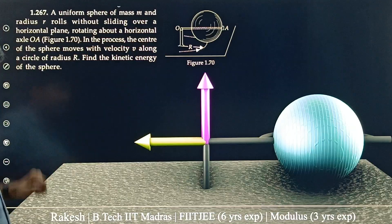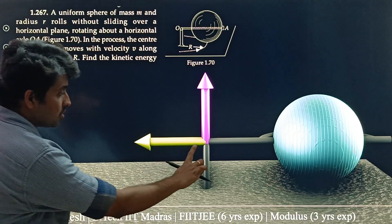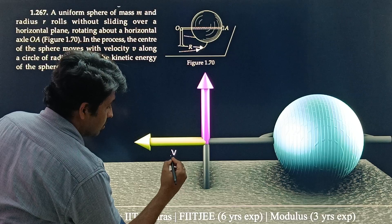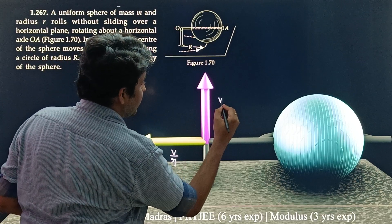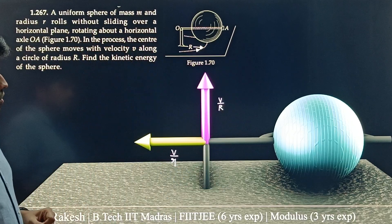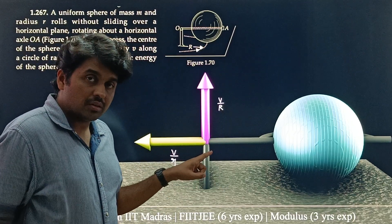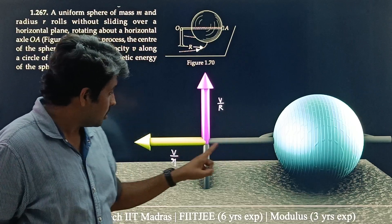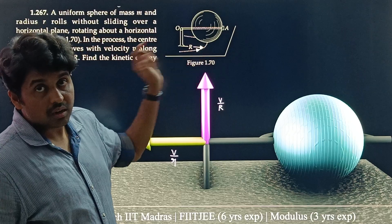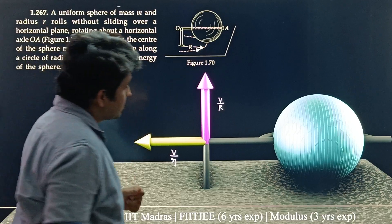Now let us move forward. Basically we have got this omega x as V by small r and this omega y as V by capital R. We can say the angular velocity of this sphere is V by r i cap plus V by capital R j cap.